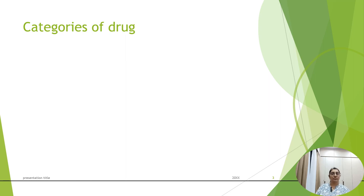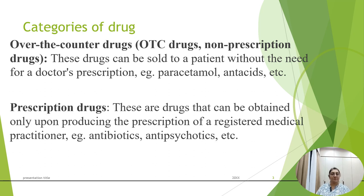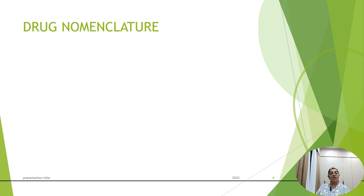Now let's discuss the various categories of drugs. First is the over-the-counter drug, which is sold on the counter of the medical store. These drugs, like paracetamol or antacids, don't require a doctor's prescription. The other is the prescription drug, which requires a registered medical practitioner's prescription — examples include antibiotics and antipsychotic drugs.